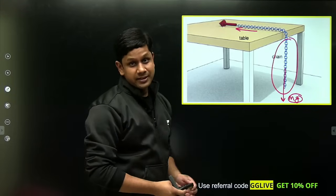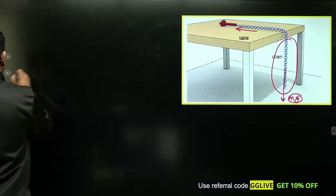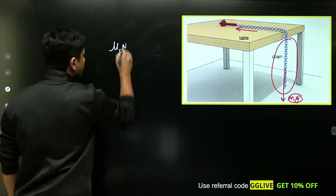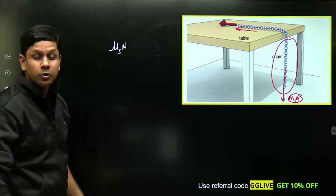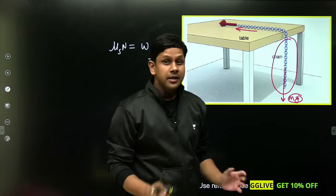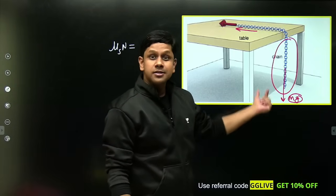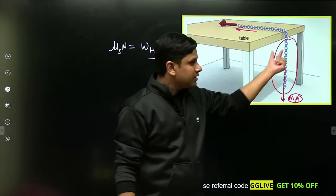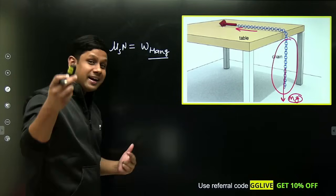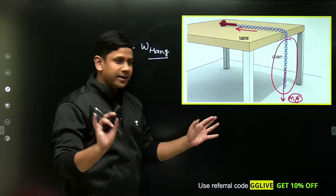The basic idea is that in equilibrium situation, when the chain is at rest and maximum length is hanging, the maximum static friction should balance the weight of the hanging portion. Maximum static friction is given by μ_static into normal force, which will balance the hanging weight. So we write disturbing force as only hanging weight, and it is balanced by the friction force, the maximum value of friction force.